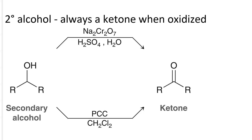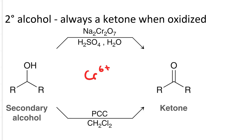If you have a secondary alcohol, you don't need to worry about choosing between Jones and PCC, because the furthest it can be oxidized is to a ketone. Whether we use Jones reagent (not selective) or PCC, we're just going to get a ketone. We should note that both Jones reagent and PCC contain chromium(VI) ion, which is seriously toxic — like cancer in a bottle — and we'd like to avoid it if at all possible.